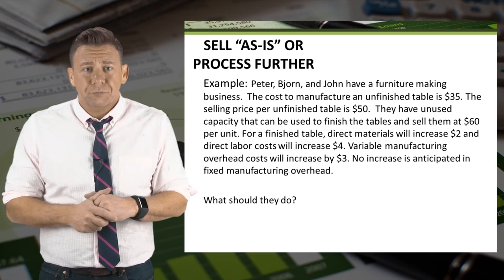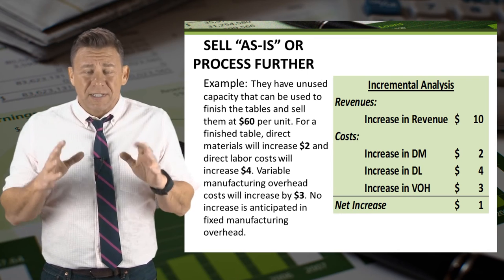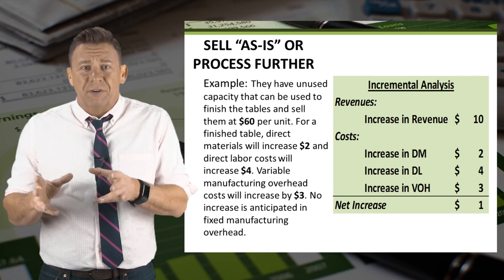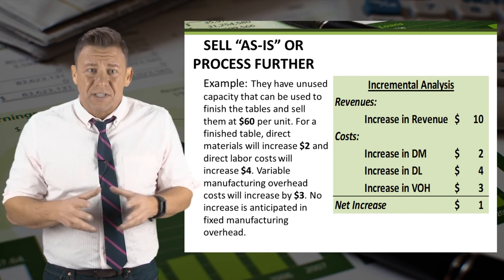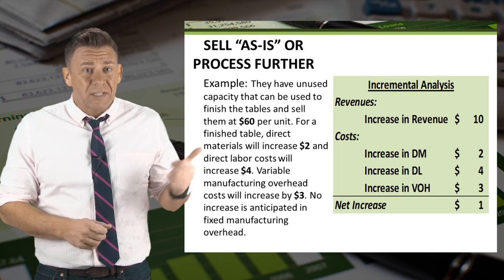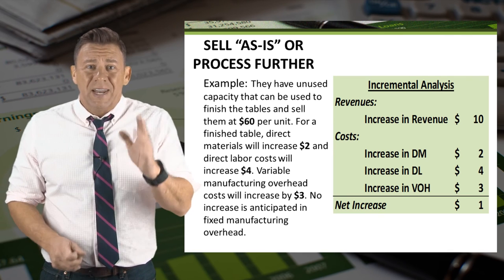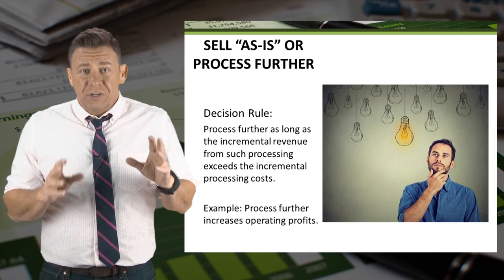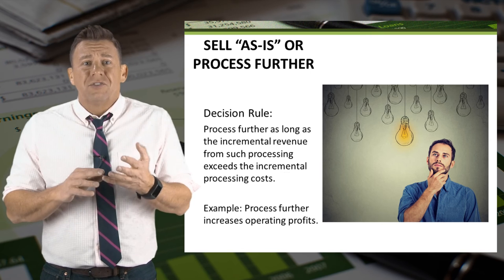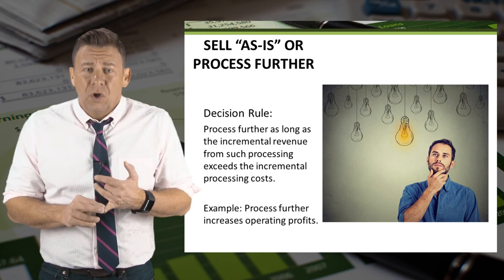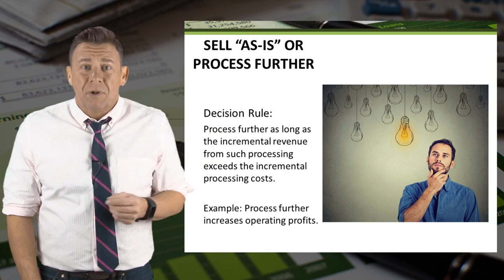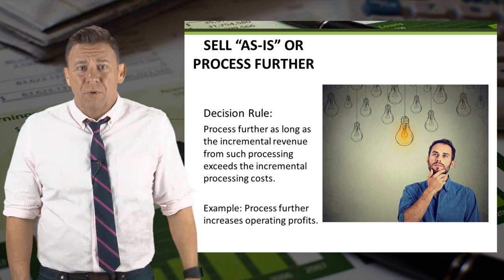So with that data, what should they do? We need to perform the incremental analysis on the situation — basically, we're looking to see if the changes in revenue are greater than the changes in costs. Revenues increase $10, costs only increase $9, so the net increase is $1. The decision rule for these types of short-term business decisions is to process further when incremental revenues exceed incremental costs. In our example, finishing the tables would increase operating income.